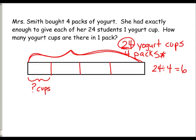If they can't, and it's still early for them, they would take the 24 yogurt cups and sort them equally into the four packs or groups. And they would count 1 through 24, distributing them evenly. Then the students can easily see that there are six cups in each pack.